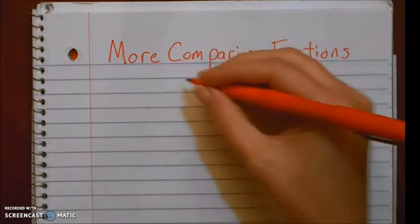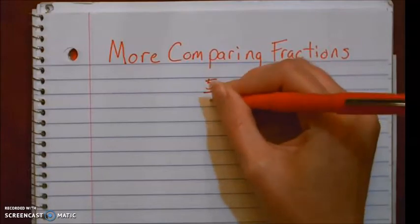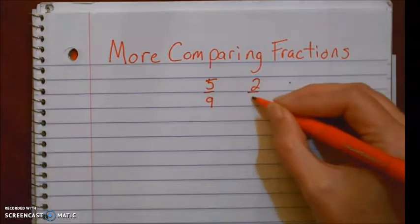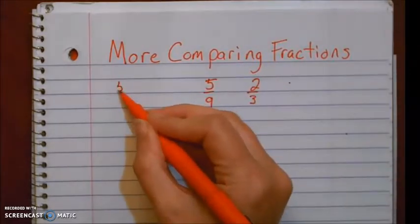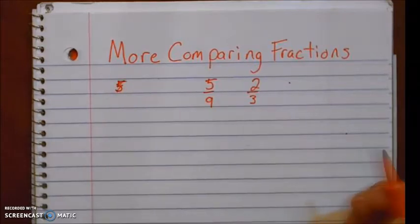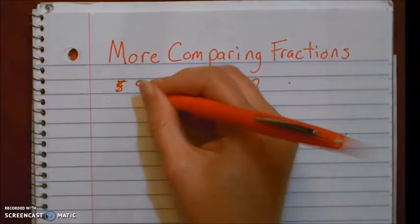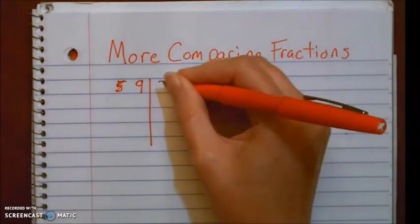So the first ones we're going to compare are five ninths and two thirds. Okay, we're going to come over and we're going to make our t-chart. Nine, we've got to use the denominator not the numerator, and three.